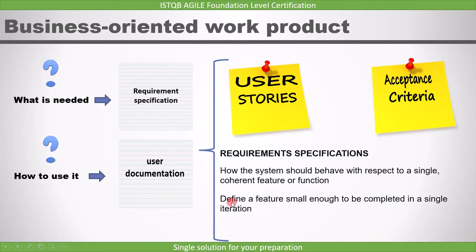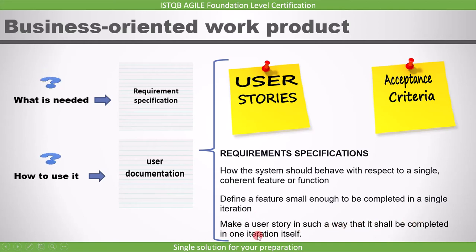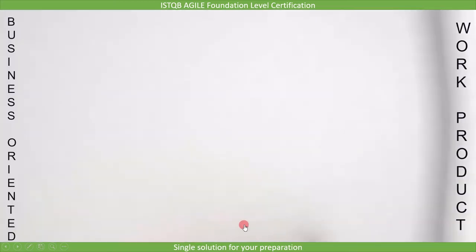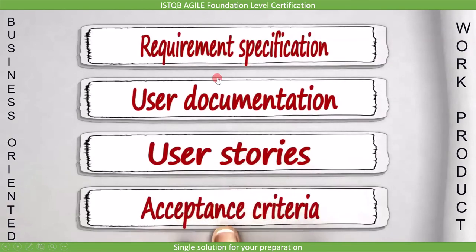User stories are the agile form of requirement specifications and explain how the system should behave with respect to a single coherent feature or function. A user story should define a feature small enough to be completed in a single iteration. What you need to remember is: requirement specification, user documentation, user stories, and acceptance criteria are the work products of a business task.